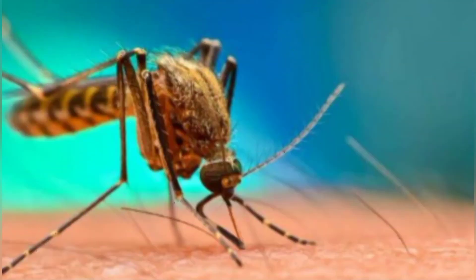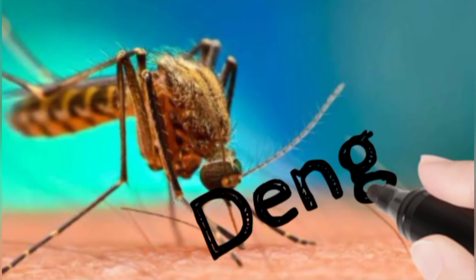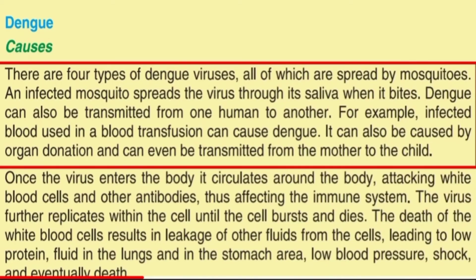Now let's come to the second disease — dengue. Dengue is basically caused by four types of dengue viruses. You can't get dengue fever from being around an infected person; instead it is spread through mosquito bites. The virus enters the body and attacks the white blood cells and the antibodies — in short, the immune system gets affected. Then the replication process starts in the cell.